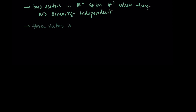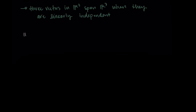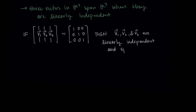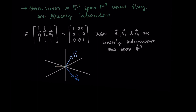So let's think about this in R3. The theorem tells us that three vectors in R3 will span R3 when they are linearly independent. If we take the vectors as a matrix and row reduce, getting something like [1,0,0; 0,1,0; 0,0,1], then because we have a pivot in every column, this tells us the vectors are linearly independent and span R3. We have three independent directions we can go, and a linear combination of those three directions will allow us to reach any point in R3.